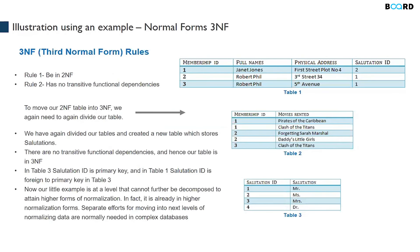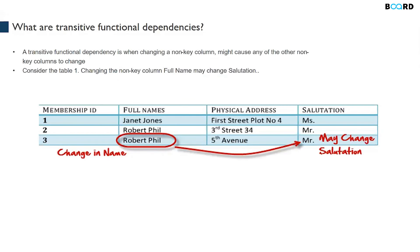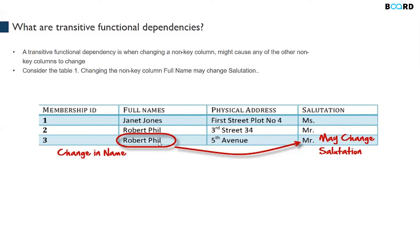Now let's talk about transitive functional dependency. If you change something in one column, it affects other non-key columns. For example, if Robert Phil finishes his doctorate, his name becomes Dr. Robert Phil and his salutation changes from Mr. to Dr. A change in the full name causes a change in the salutation — these two columns are dependent on each other. That is transitive functional dependency.